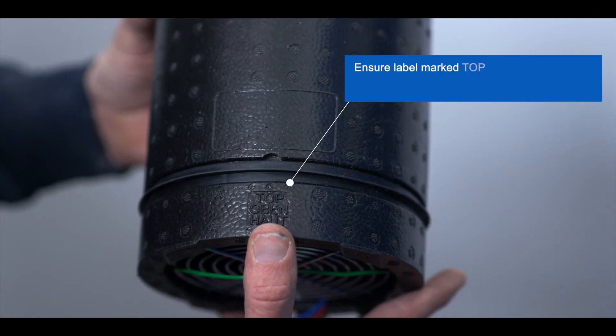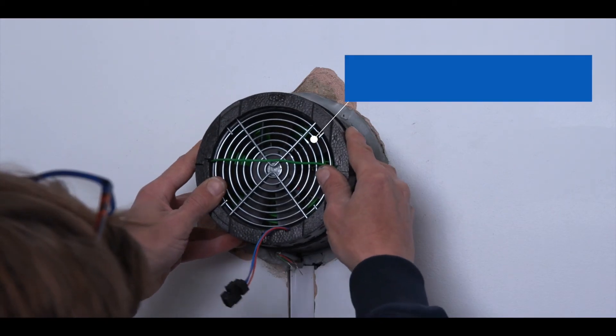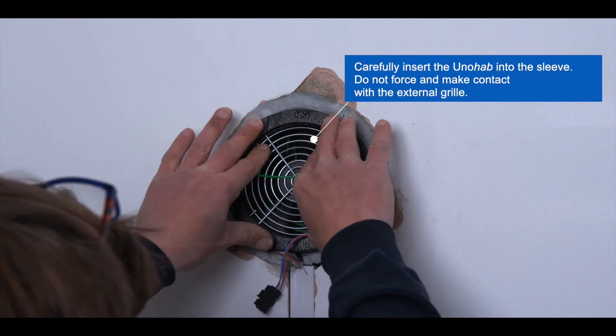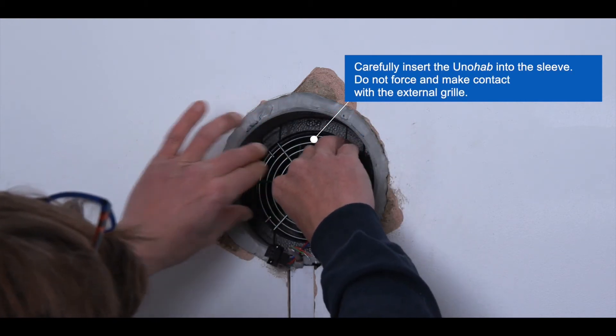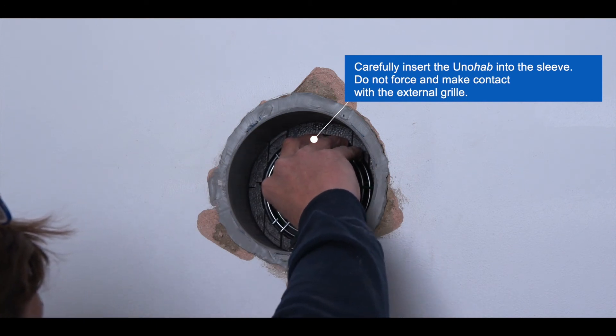Ensure the label marked top on the unahab unit is in the correct position before inserting into the wall sleeve. Carefully insert the unahab unit into the sleeve. Do not force and make contact with the external grill as this could cause damage.